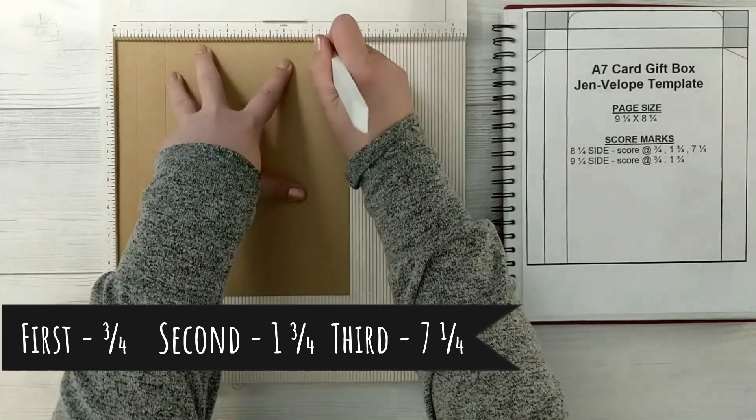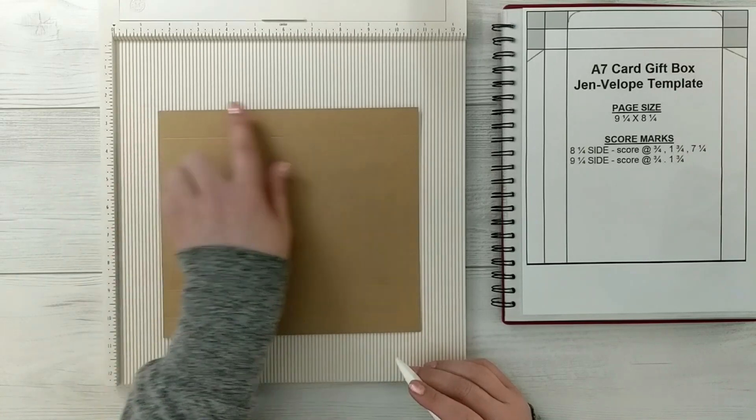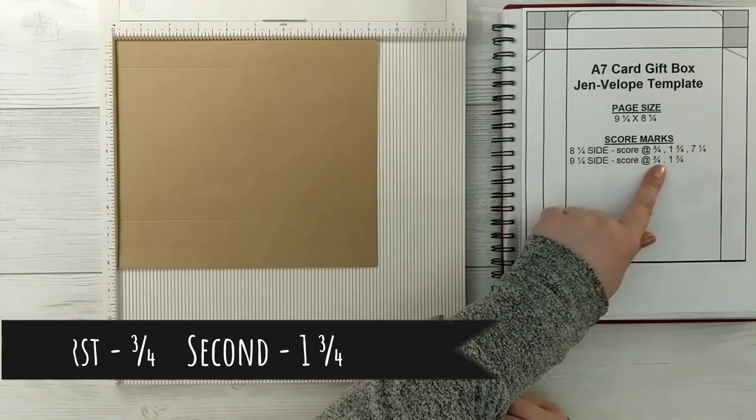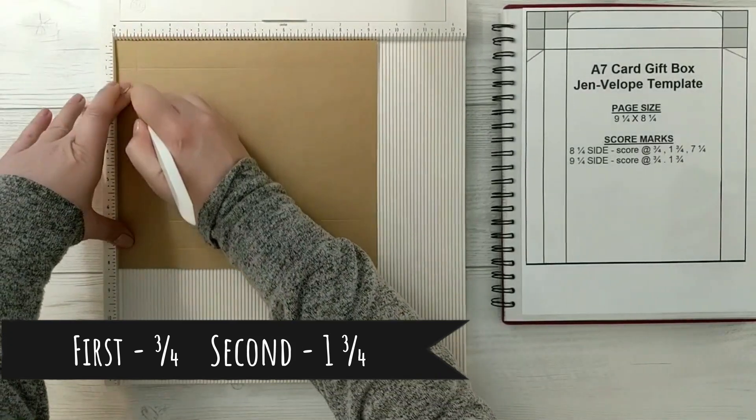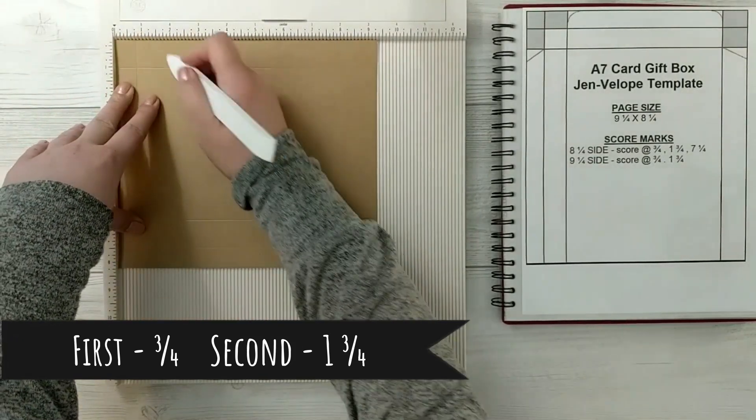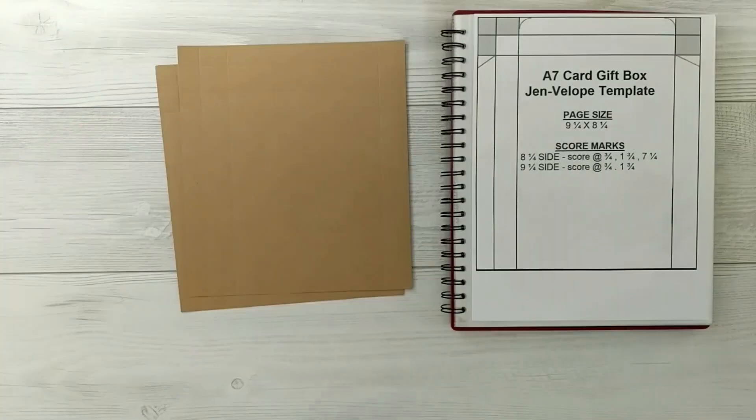You'll rotate the cardstock one turn to the left to the nine and a quarter inch side. Your first score will be three quarters of an inch and one and three quarters of an inch. And then you'll repeat that for the second cardstock and then we'll get to trimming.